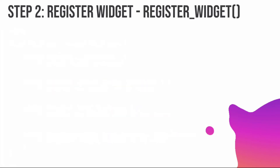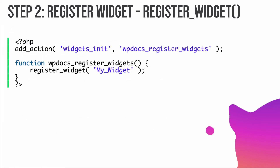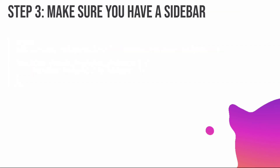The next step is to register the widget using WordPress's register_widget() function. You create a custom function, call register_widget() inside it, and hook it to the widgets_init hook. Inside register_widget() you pass the name of your class — and if you're using namespaces, you prefix the class name with the namespace accordingly.